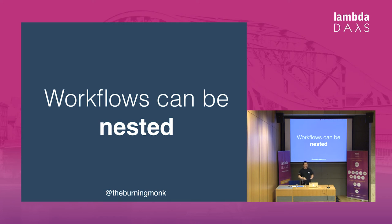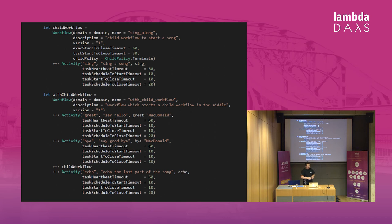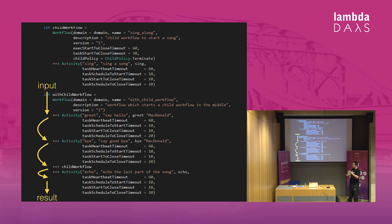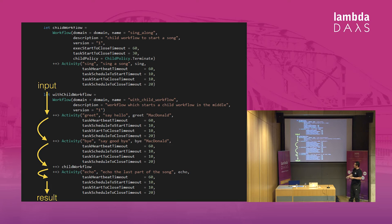Workflows can be nested — that's a feature the service offers — so you can have a parent workflow that kicks off a child workflow, and when it's done, continue from the parent. We can support that in this DSL as well: declare a child workflow and attach it to a parent workflow the same way you'd attach an activity. The library also handles propagation of input to output — if you start the workflow with some input, it gets passed to the first activity, whose return value is passed as input to the next, and the same works with child workflows.